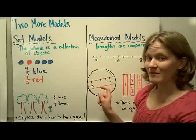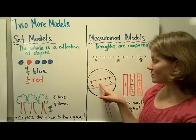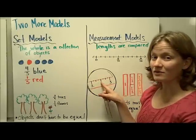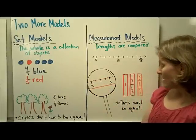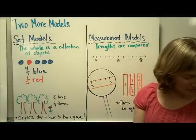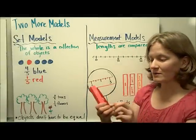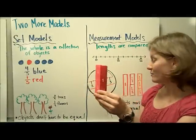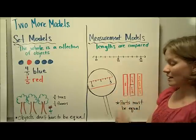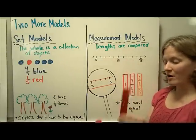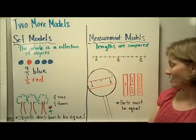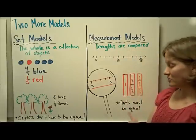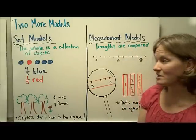And measurement models, and you can see that this would be two and a half inches, for example, if this was an inch ruler. And finally, fraction towers that we will use in class quite frequently are an example of the measurement model, where this, the red, equals one whole, and the parts get smaller as the denominator gets bigger. In all of the measurement models, you need to remember that the parts must be equal.